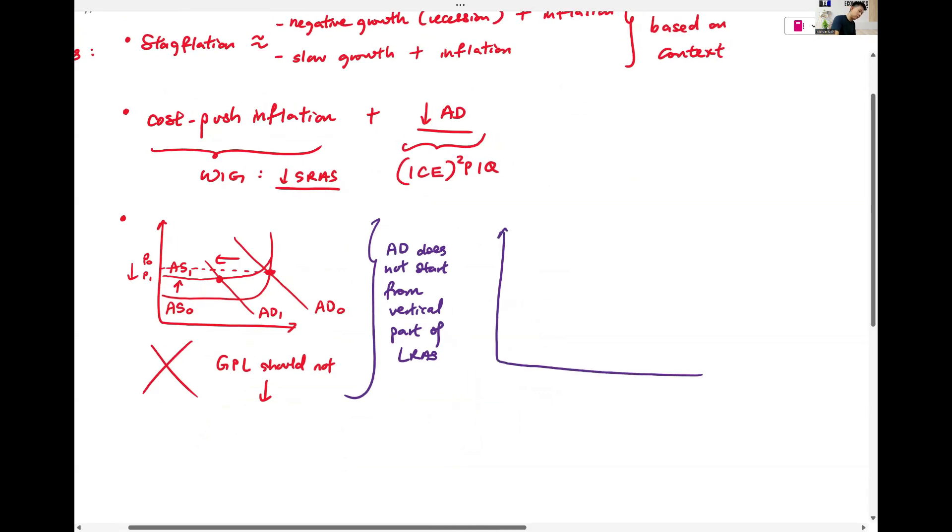So this is how I do it. AD falls from AD0 to AD1. Just make sure your final price is higher than P not. So you can show AS0 to AS1. P1, P0, Y1, Y0. And this is okay. This is good.